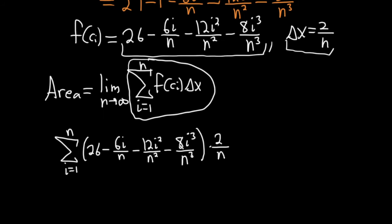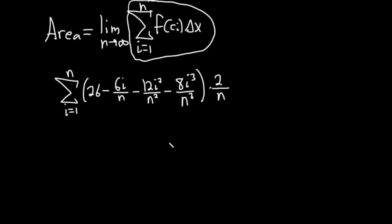This is probably one of the messiest ones found in most textbooks used to teach calculus. Now we're going to use some powerful math. We're going to break this up into four sums all in one step. If it doesn't have an i, you pull it out. 2 over n times 26, that's 52 over n and we're pulling it out. It's going to leave us with a 1.